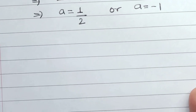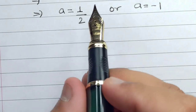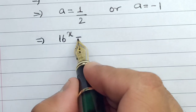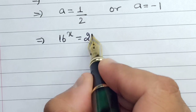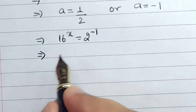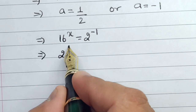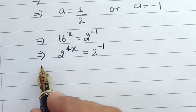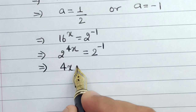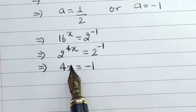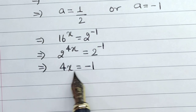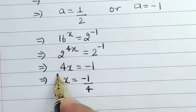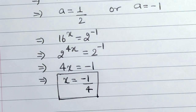So we have two cases for a, from which we will calculate x. We had taken a equals 16 to the power x. For the first case, 16 to the power x equals 1 by 2. Now 1 by 2 can be written as 2 to the power minus 1. And 16 can be written as 2 to the power 4. So 2 to the power 4x equals 2 to the power minus 1. Using the property that if bases are equal the powers can be equated, we get 4x equals minus 1, which implies x equals minus 1 by 4. This is the first part of the answer.